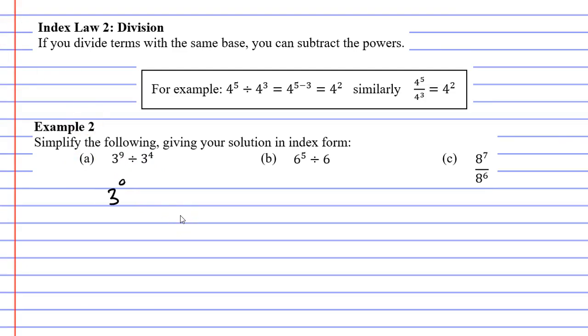It's division, and the base numbers are the same, so we simply subtract the powers. So 3 to the power of 9 minus 4 gives us 3 to the power of 5.